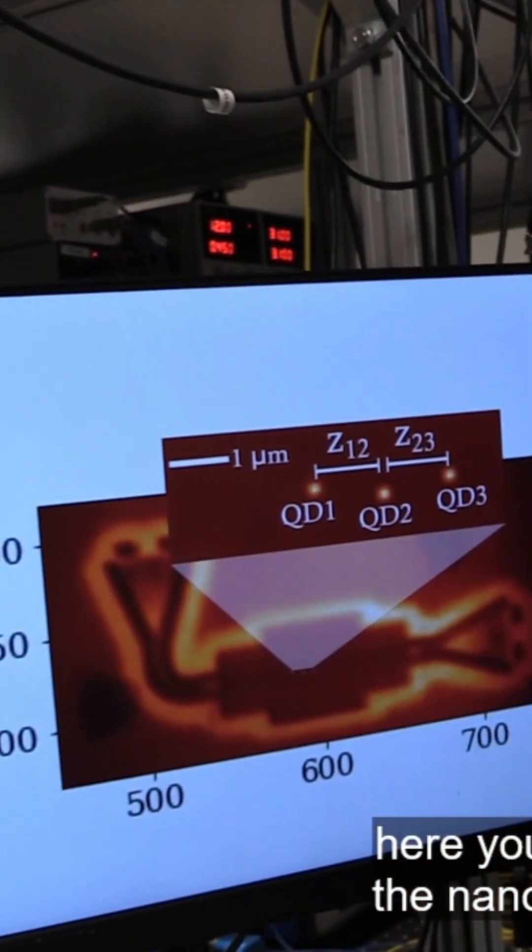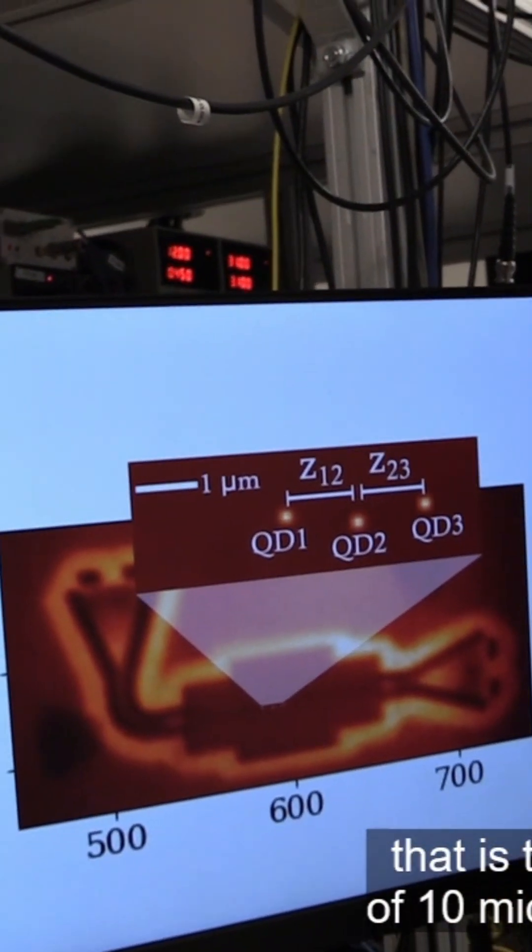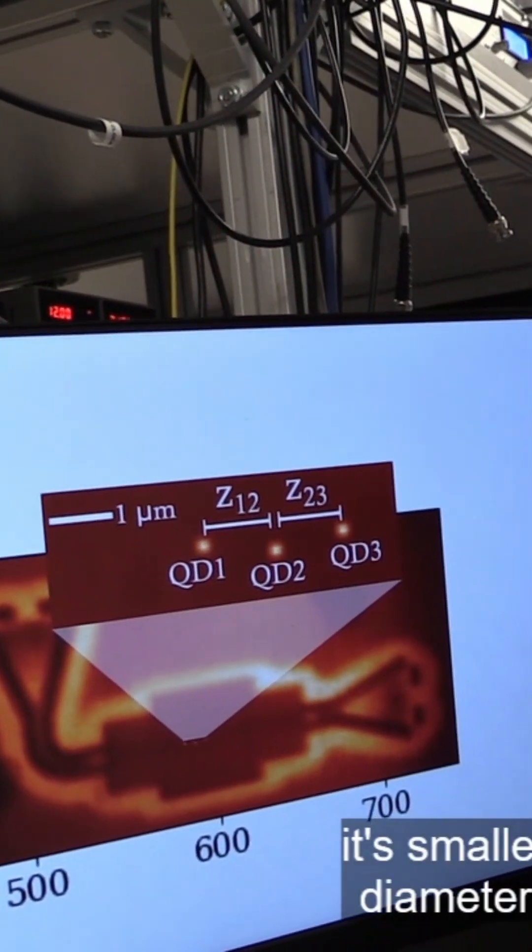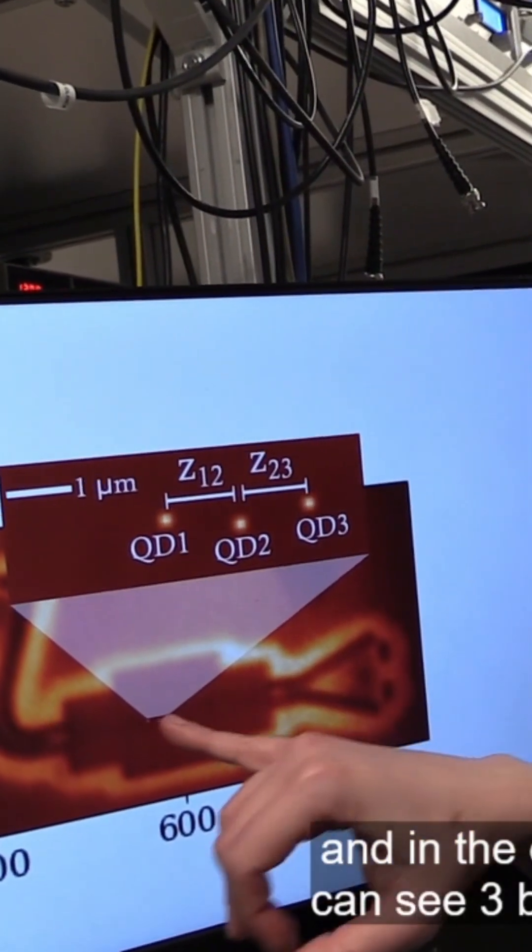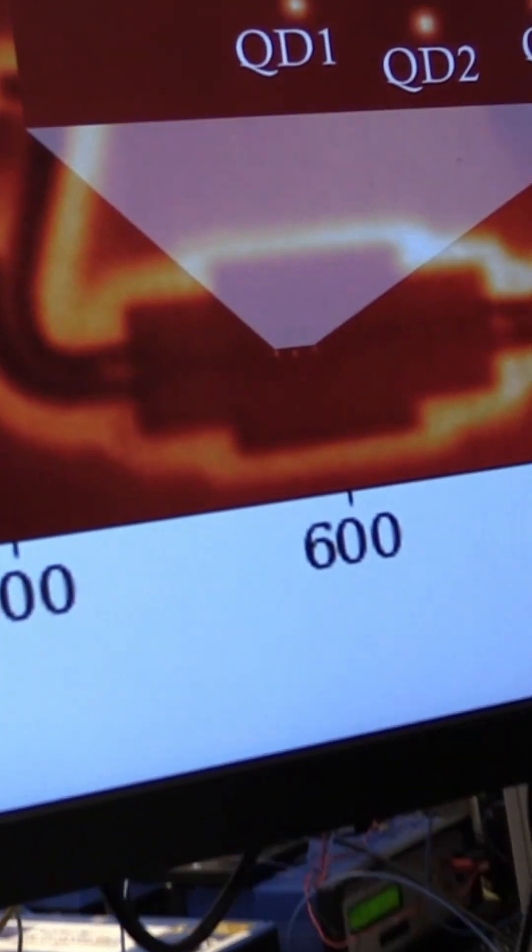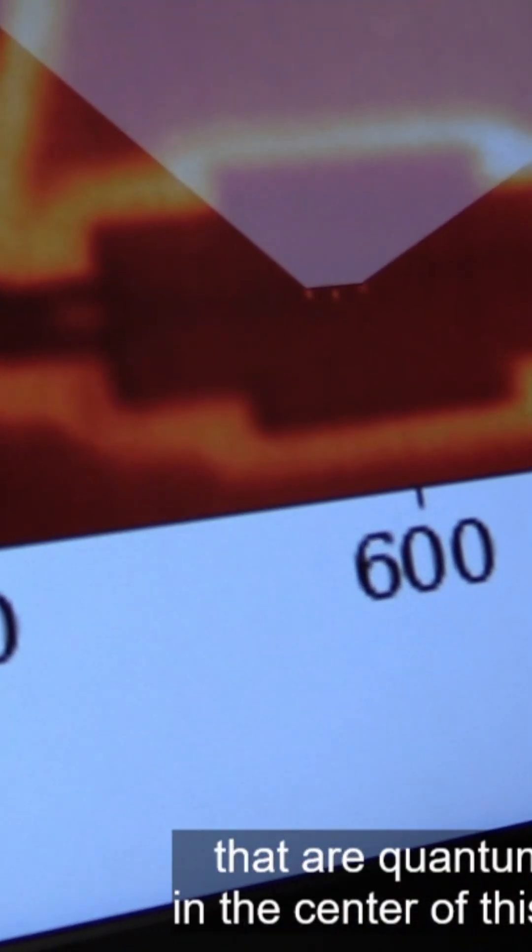Here you can see the nanostructure that is of a size of tens of micrometers, or in fact smaller than the diameter of a hair. And in its center you can see three bright spots that are quantum emitters, our quantum dots, sitting at the center of this device.